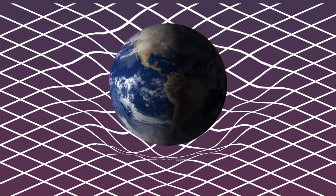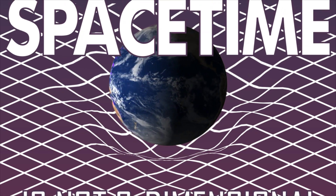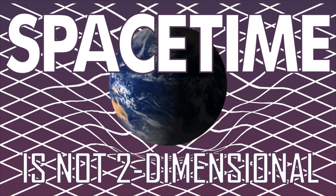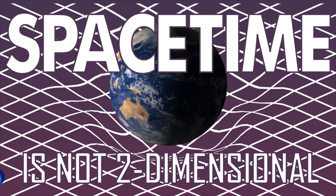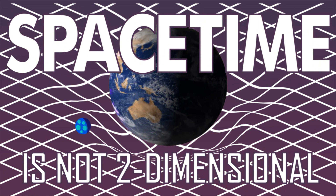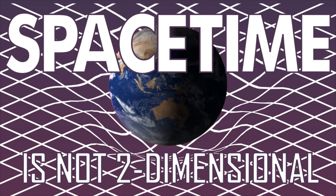But how about space-time? Every matter lies on a space-time fabric, which is bent by massive bodies like Earth. Just keep in mind that space-time is not two-dimensional. Because of this, matter falls radially inward, and it also affects time.